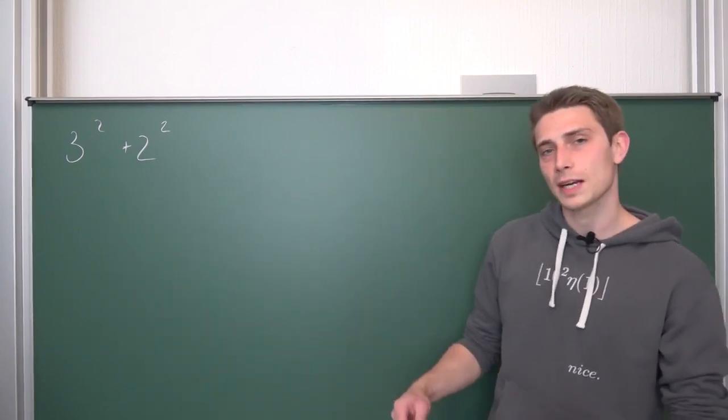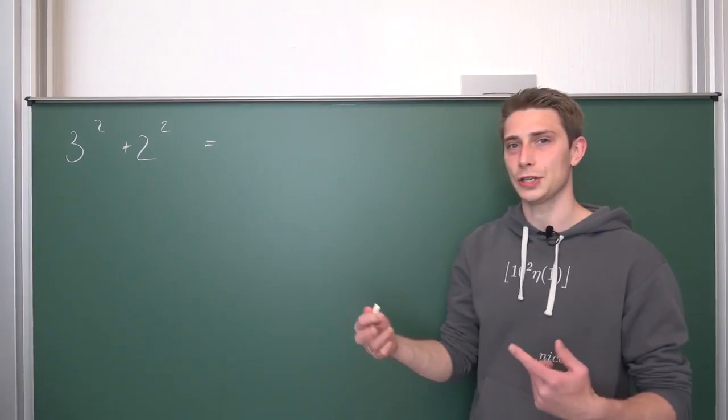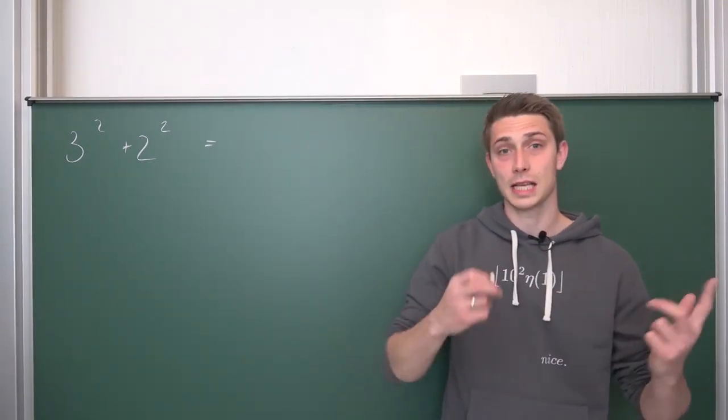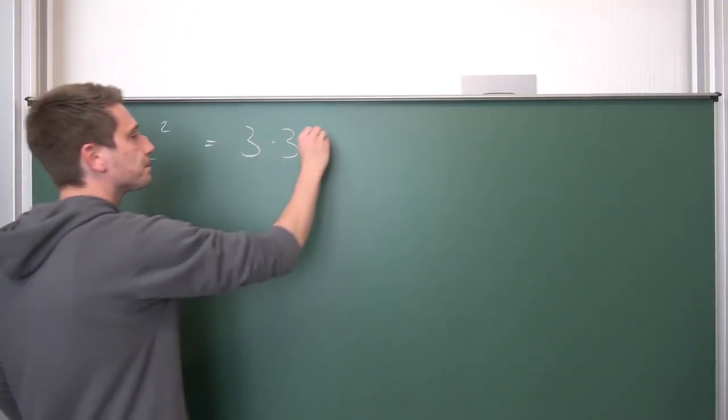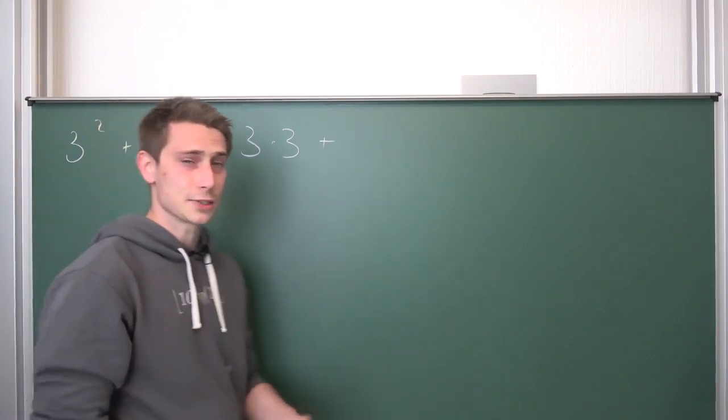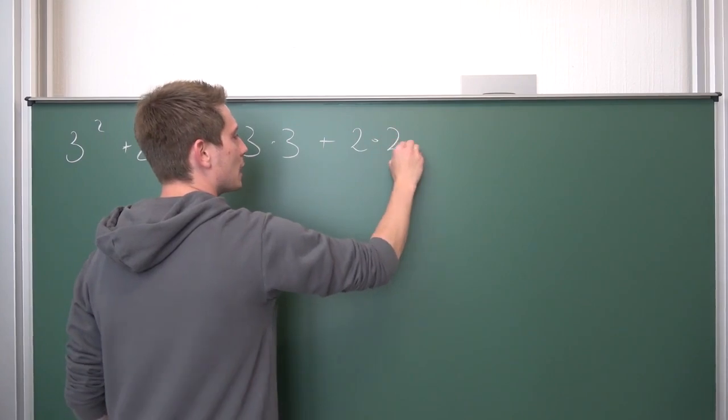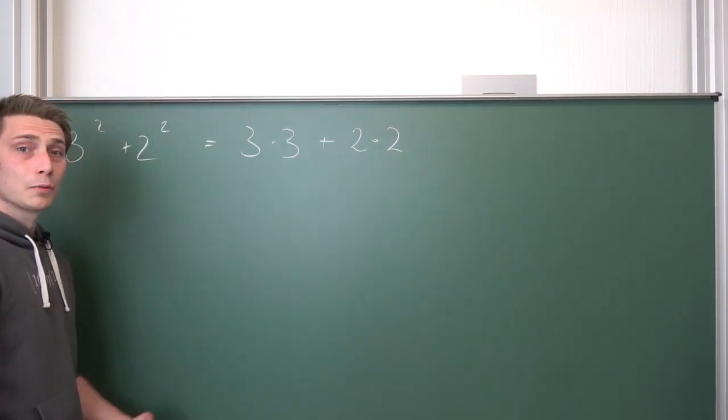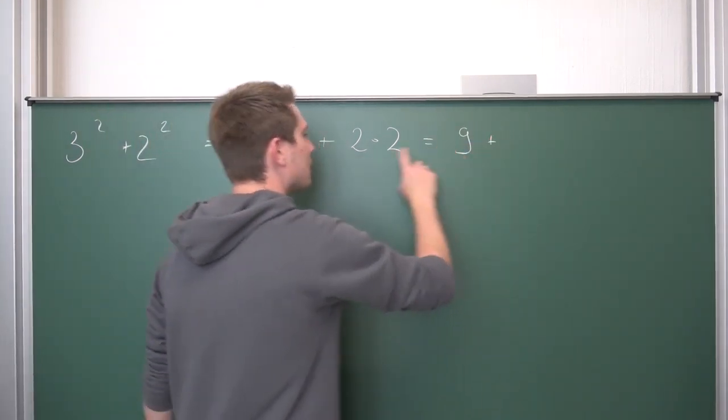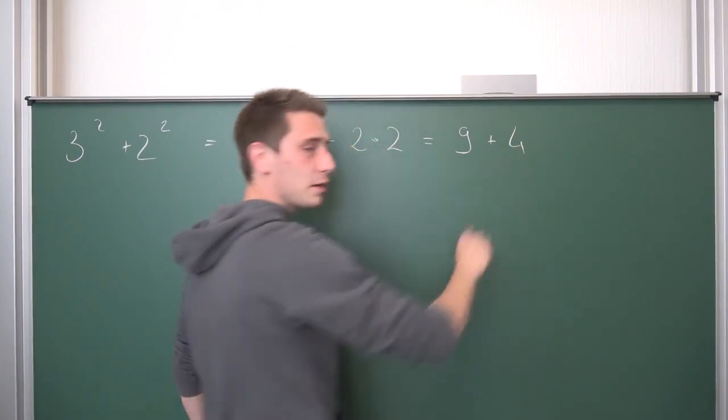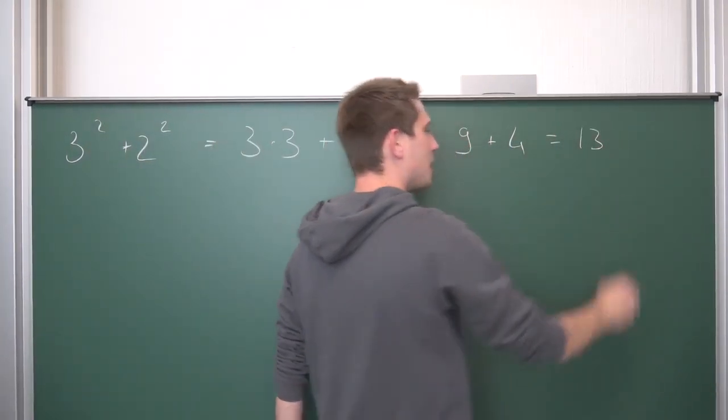So 3 squared plus 2 squared. Let us write everything out. Let us go back to the definition of what 3 squared actually is. 3 squared is nothing but 3 multiplied with itself 2 times. So this is 3 times 3 plus, okay, 2 squared is 2 multiplied with itself exactly 2 times, meaning this is 2 times 2. Now we can just calculate everything: 3 times 3 is 9 plus 2 times 2 is 4. Meaning 9 plus 4 in natural numbers is nothing but 13. Okay, this is 13.